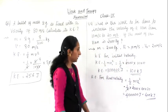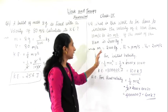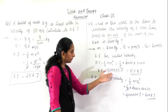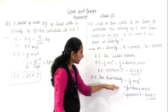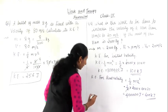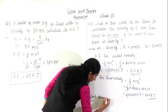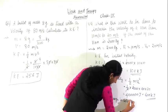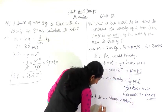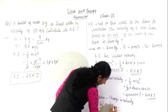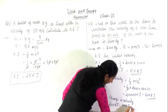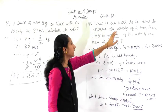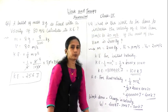Now you have to find the work done. Work done means change in kinetic energy — from the work-energy theorem, W equals change in KE. So you subtract the initial KE from the final KE: 400 kilo joule minus 100 kilo joule, and you get 300 kilo joule. This is the work done on the van to increase its velocity. Thank you.